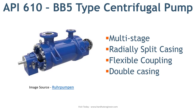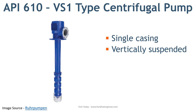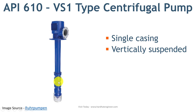The last API 610 category for centrifugal pumps is the vertically suspended pump, popularly known as VS type. The first is VS1, which is a single casing vertically suspended design used as a wet pit pump or diffuser pump. The column of the pump is used as the discharge path — suction happens from the bottom and liquid is pushed up through the column.